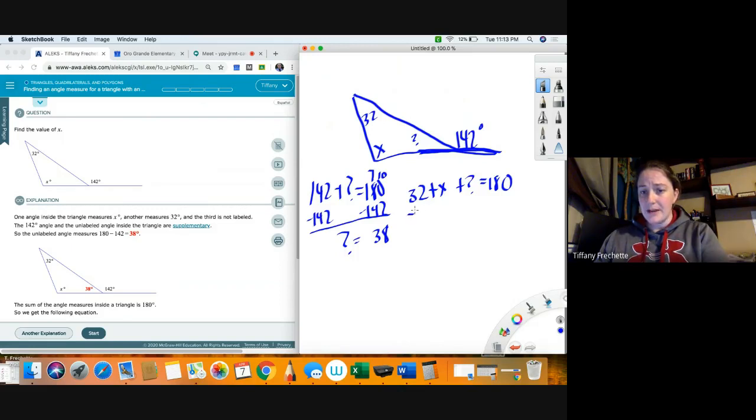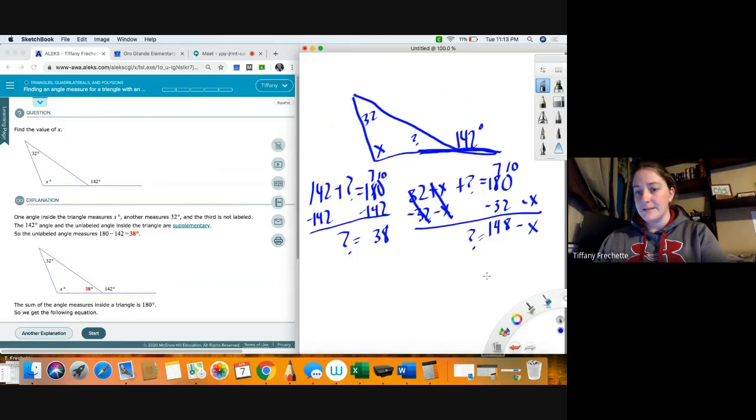And then with this one, I'm going to subtract 32 and I'm going to subtract X from the end there, so I'm kind of doing it all at the same time. So 32 minus 32 goes away, X minus X goes away, so I have question mark equals 148 minus X.